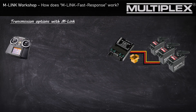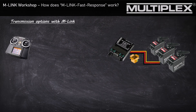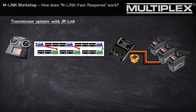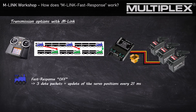To visualize it for you, I drew a few trains. We see blue trains and green trains. One train stands for a whole data information. The blue trains are longer than the green trains — blue trains have three wagons, and each wagon stands for a data package. That means three data packages, which means Fast Response off, with servo position updates in cycles of 21 milliseconds.